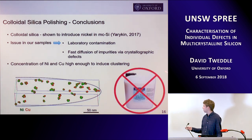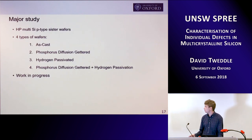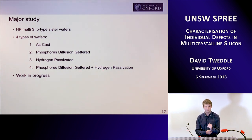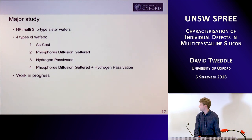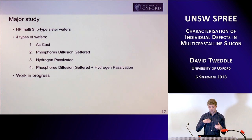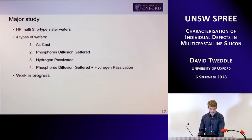So my main conclusion is: don't use colloidal silica polishing. We need to use chemical etching because we don't want to contaminate our samples. Now down to the major study. This is some HP multi, which is probably the main dominant material nowadays — P-type sister wafers. I've got four sister wafers from as-cast, phosphorus diffusion gettered, hydrogen passivated, and end-of-process phosphorus diffusion gettered and hydrogen passivated. This is a work in progress — I've got another year or two — but I can show you what I've got so far.